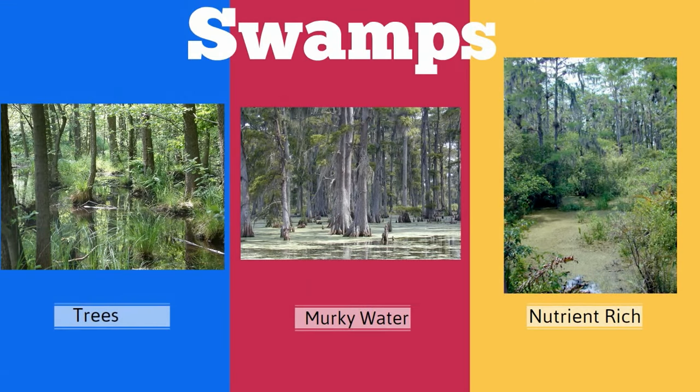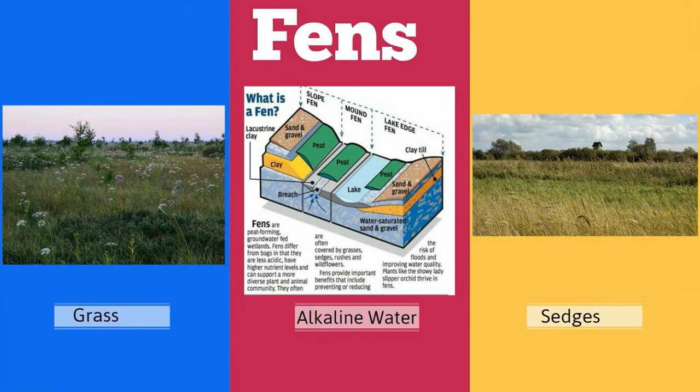Swamps are wetlands that have lots of trees. Fens are wetlands dominated by grasses.